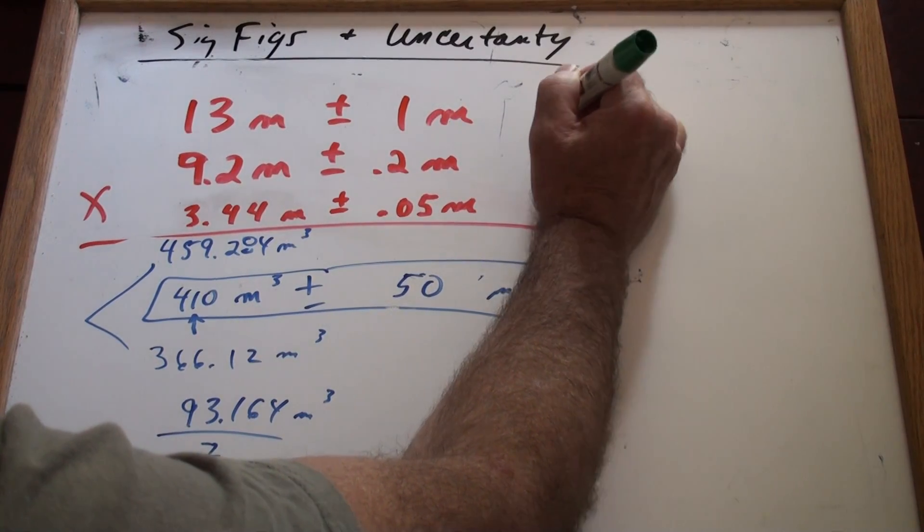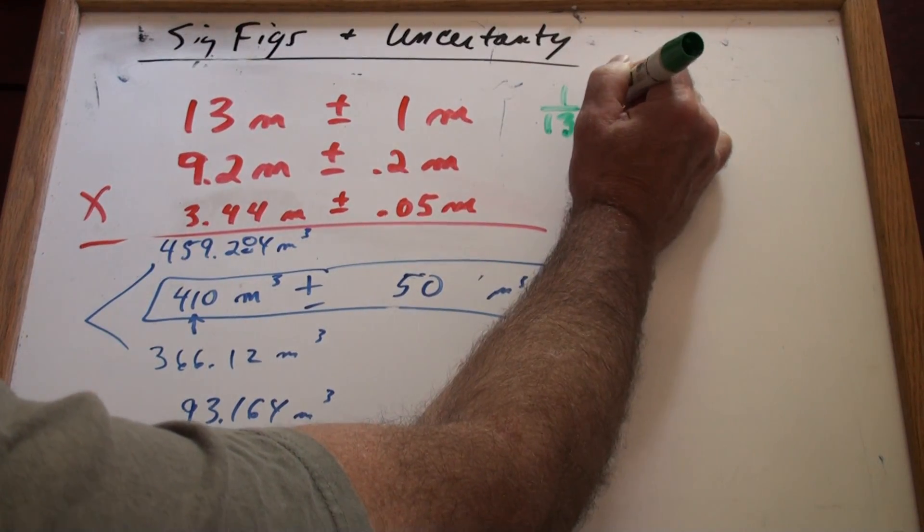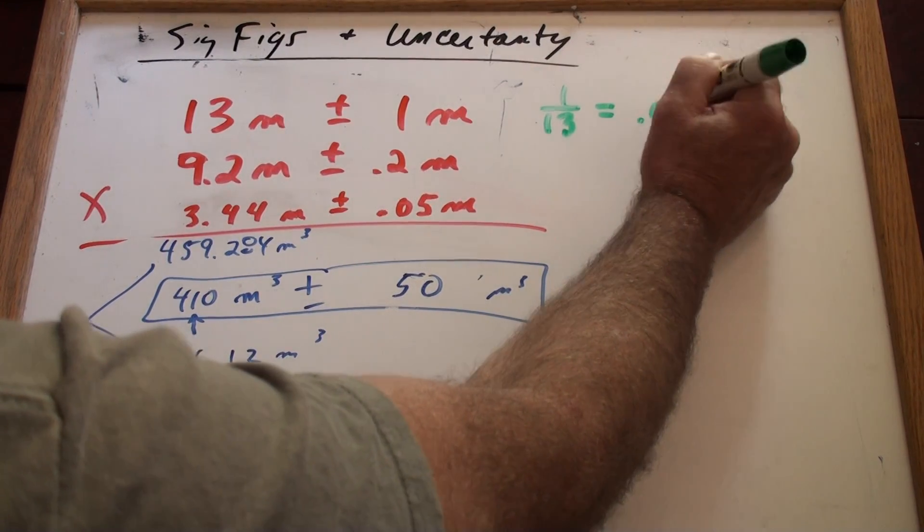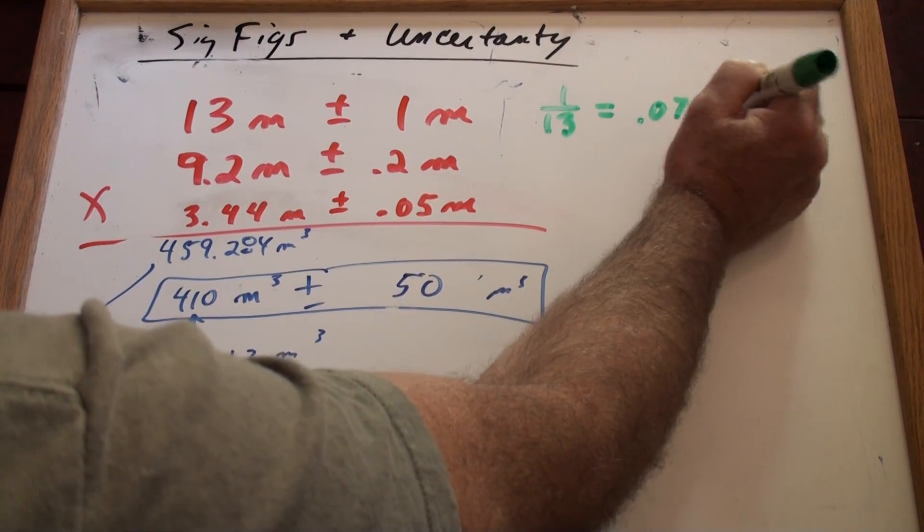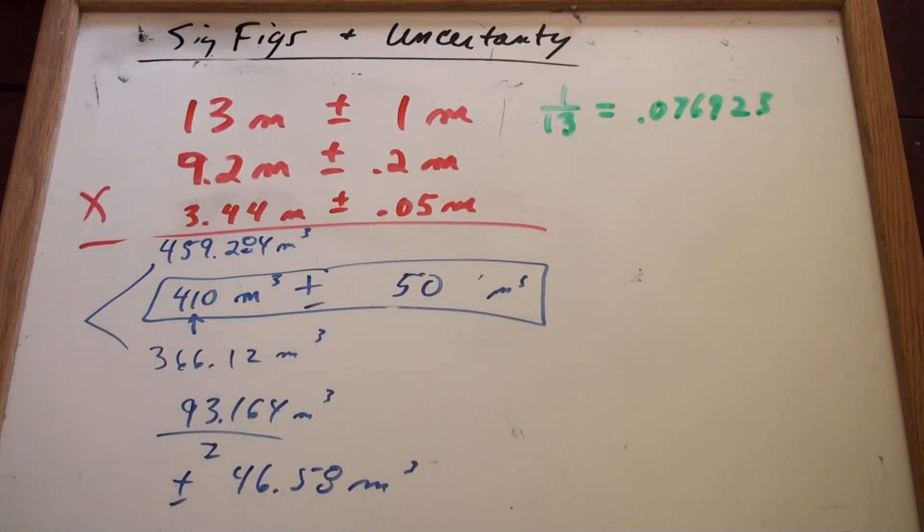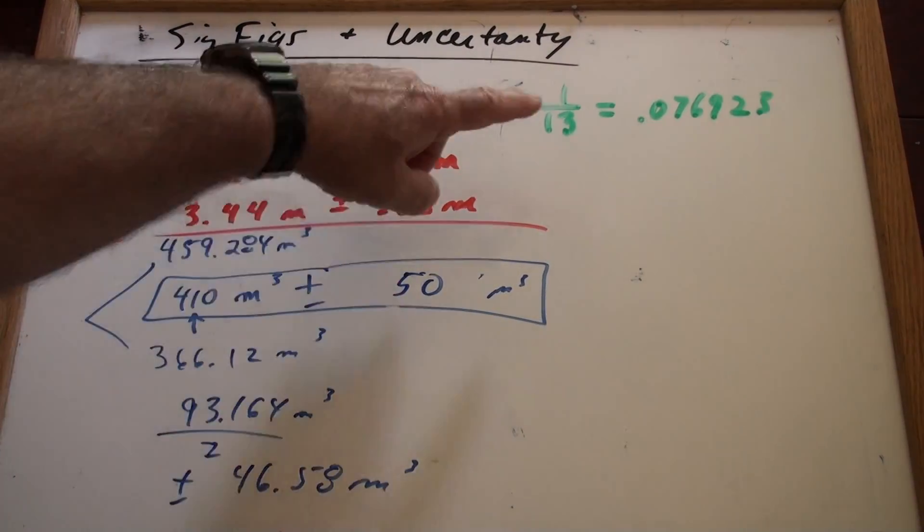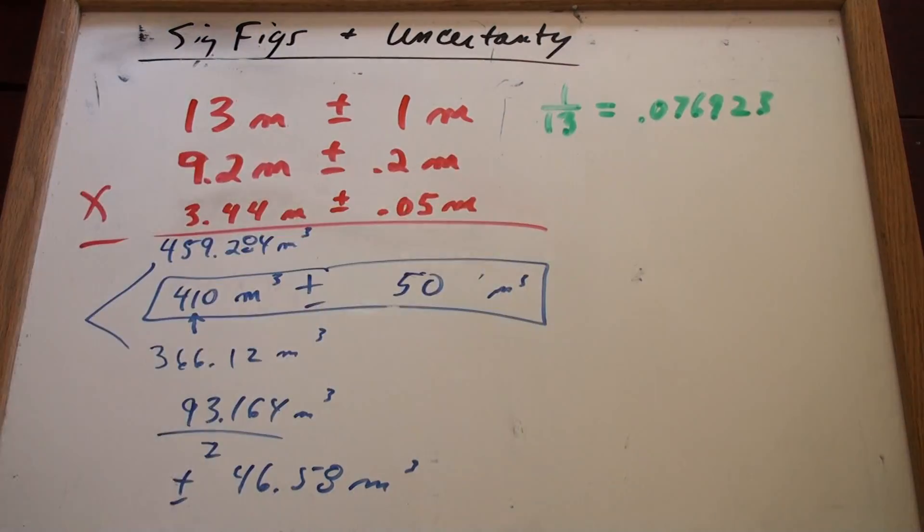And that means what you do is you take the percent uncertainty. Like, for instance, 1 divided by 13 equals the percent uncertainty. And it comes out to be 0.076923 if you don't round. In other words, if you're off by 1 out of 13, you're off by about 7.7%. That's how off you are on that number. So,